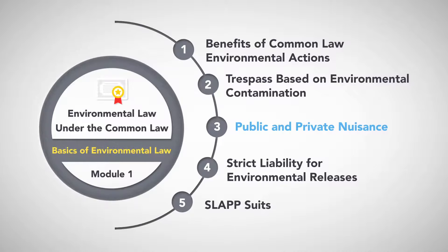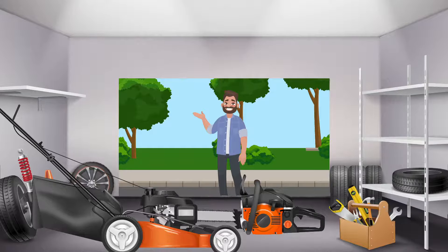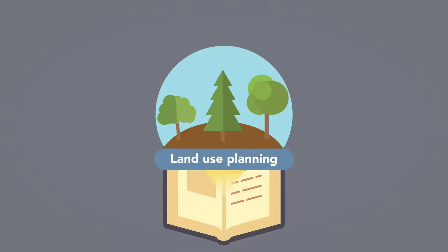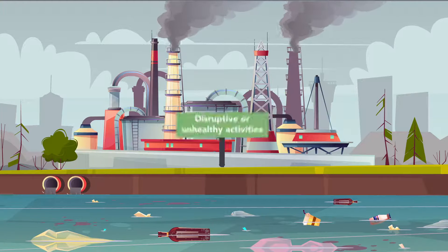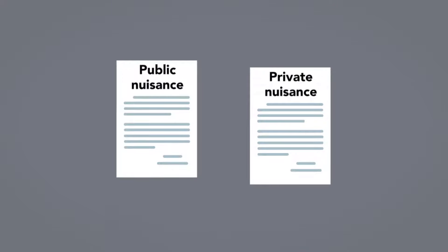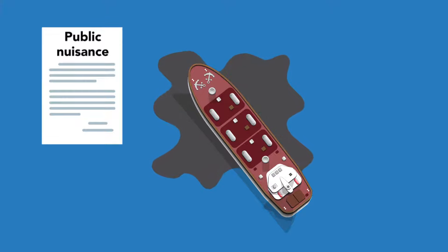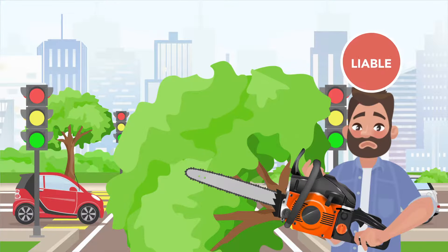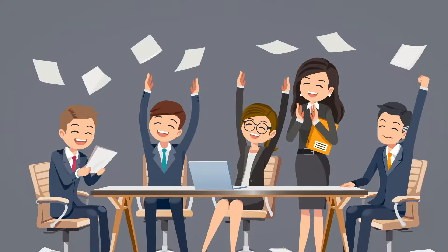Public and private nuisance. Public and private nuisance laws strike a balance between property owners' rights to use and enjoy their property and other people's rights to engage in lawful activities. Some view the development of nuisance law as an early form of land use planning, since it regulates what activities are allowed in which areas. By preventing disruptive or unhealthy activities in certain areas, both public and private nuisance actions are effective tools for combating environmental pollution. Despite how similar they sound, public nuisance and private nuisance are very different actions. Public nuisance actions arise when a defendant's activity unreasonably interferes with the use of public property. State or local agencies are typically the plaintiffs in public nuisance actions since they are the ones entitled to represent the public interest in court.